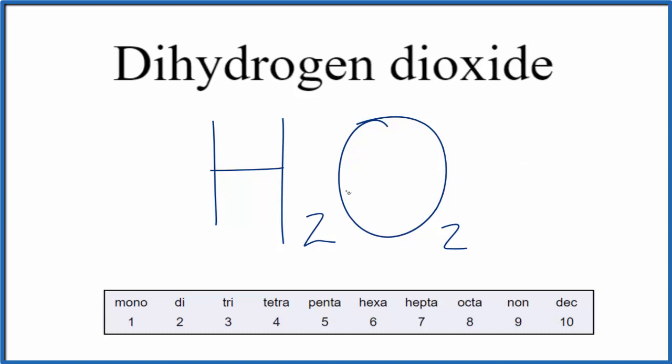You're more likely to hear H2O2 called hydrogen peroxide, but if you're asked to write the formula for dihydrogen dioxide, it's H2O2.